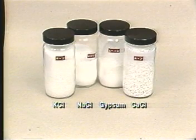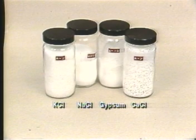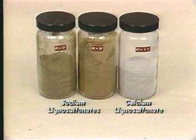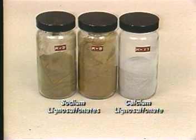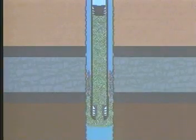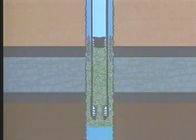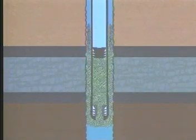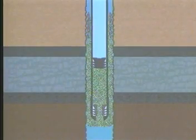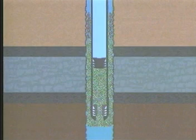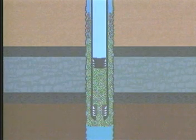Various chemical accelerators or retarders can be added to the slurry to speed up or slow down the setting time. Increasing temperatures reduce the time necessary for cement to set, so deep wells can become difficult as required pumping time increases while thickening time decreases. Retarders will usually be required to prevent premature setting of cement inside the casing.